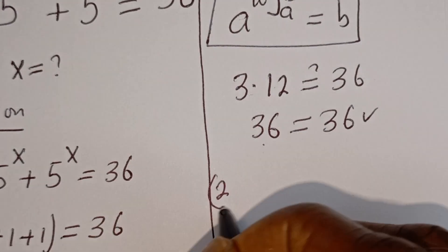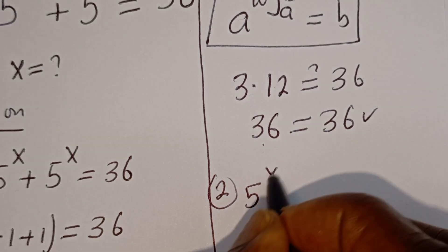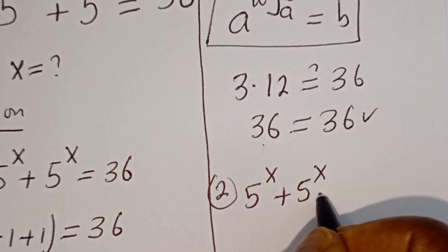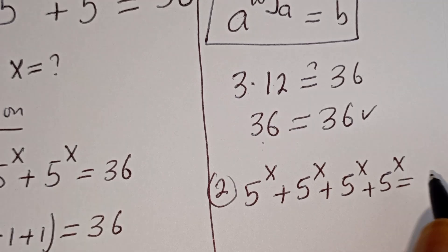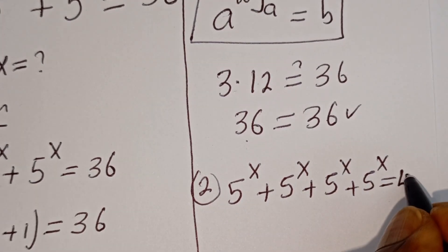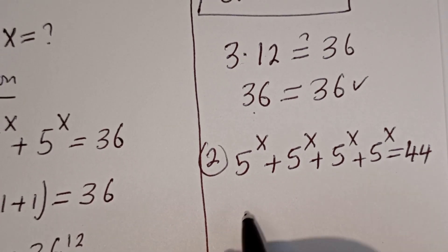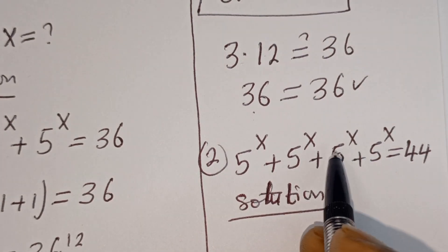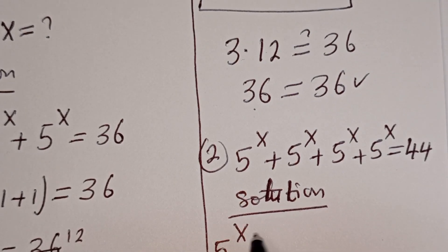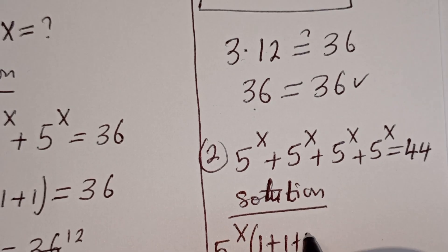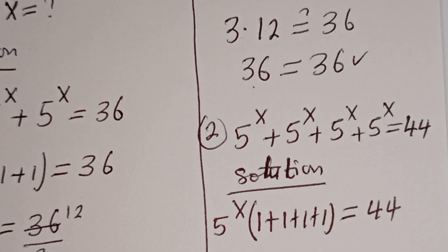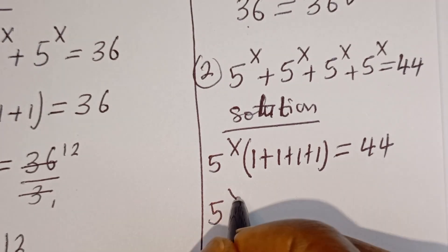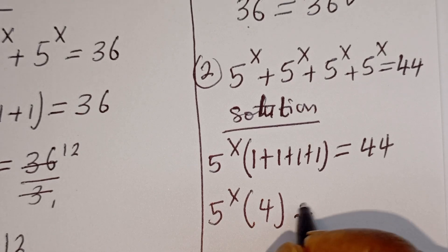Next is the second question, called question number 2. We have 5 to the power of X plus 5 to the power of X plus 5 to the power of X plus 5 to the power of X is equal to 44. Solution: 5 to the power of X is common — let's bring it out. We have 5 to the power of X bracket, with each term divided giving 1 plus 1 plus 1 plus 1, which is equal to 44.